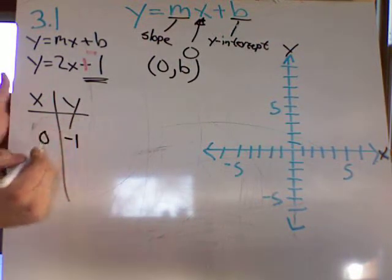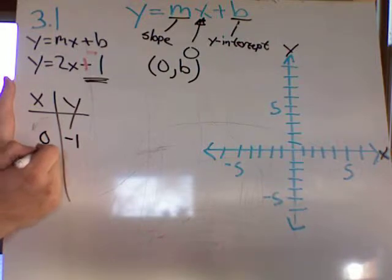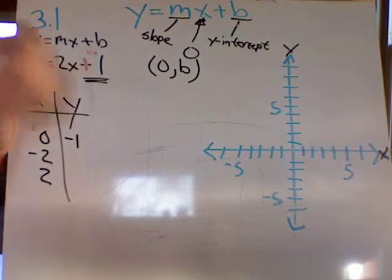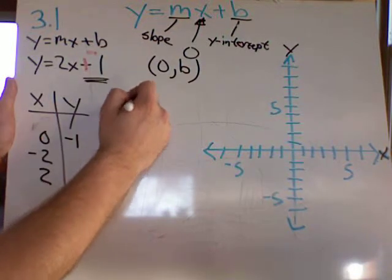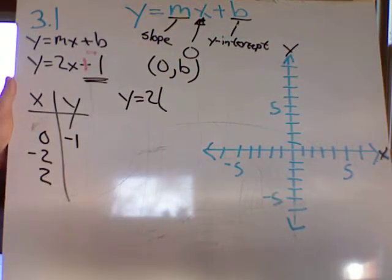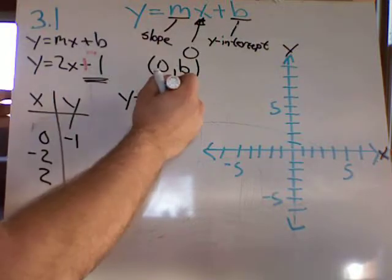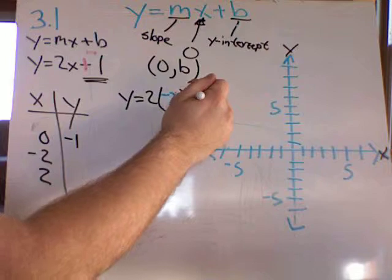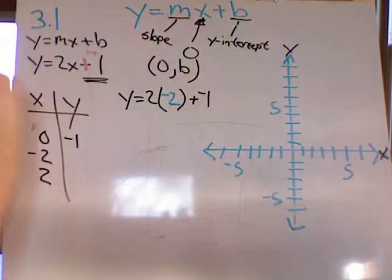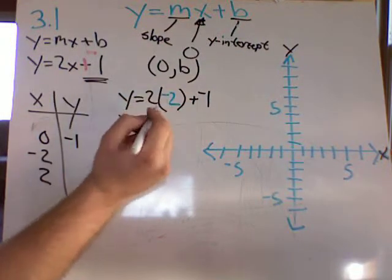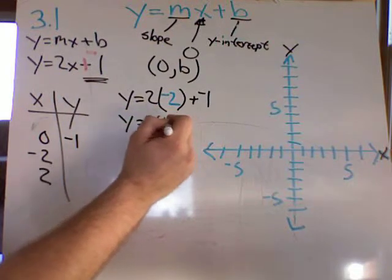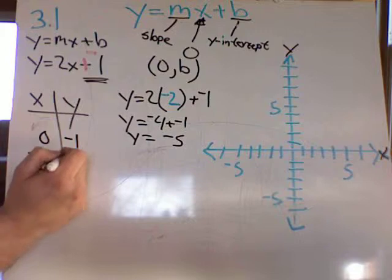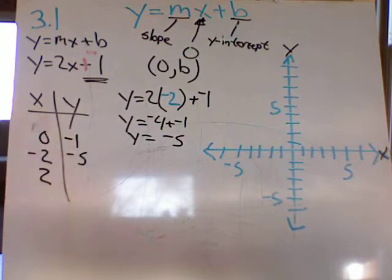Let's find another data point. Let's find when x is a negative 2, and let's find when x is a positive 2. So let's plug a negative 2 in for x. So I've got y equals 2 times negative 2 plus negative 1, or I could put minus 1. So y would be equal to 2 times negative 2 is negative 4, plus negative 1, y equals negative 5. So when x is negative 2, y is a negative 5.